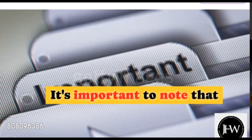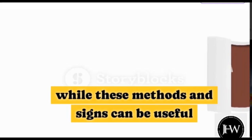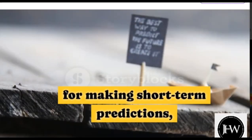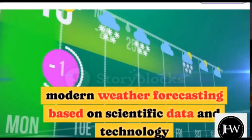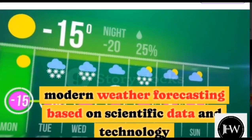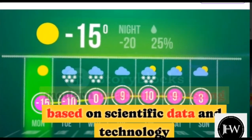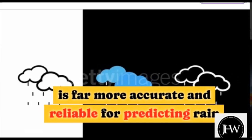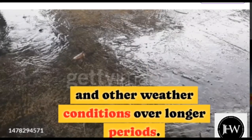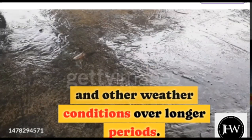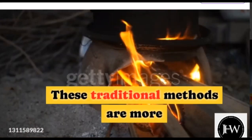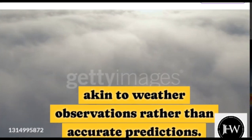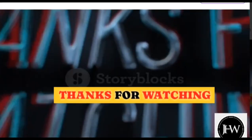It's important to note that while these methods and signs can be useful for making short-term predictions, modern weather forecasting based on scientific data and technology is far more accurate and reliable for predicting rain and other weather conditions over longer periods. These traditional methods are more akin to weather observations rather than accurate predictions. Thanks for watching.